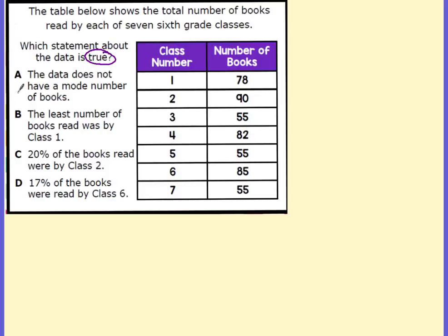Statement A says the data does not have a mode number of books. Looking at the values: 78, 90, 55, 82 — oh, here's another 55, and another 55 — and 85, and we have three 85s. So this statement is false; it does have a mode. The mode is 55.